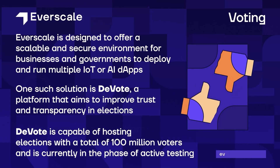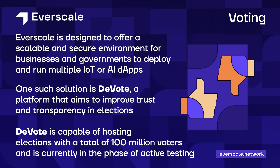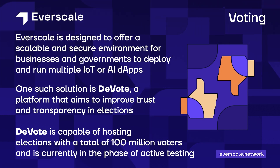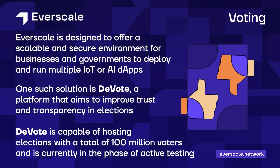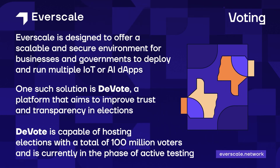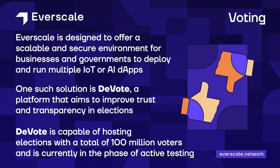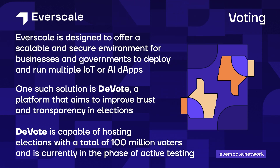Everscale is designed to offer a scalable and secure environment for businesses and governments to deploy and run multiple IoT or AI apps. One such solution is Devote, a platform that aims to improve trust and transparency in elections. Devote is capable of hosting elections with a total of 100 million voters and is currently in the phase of active testing.